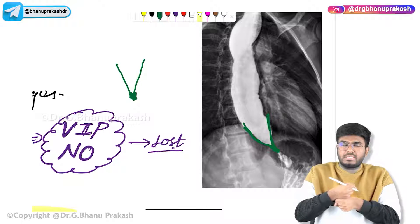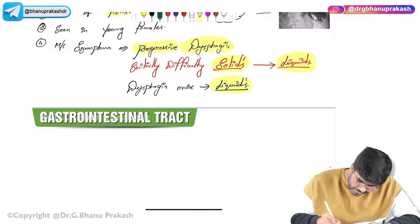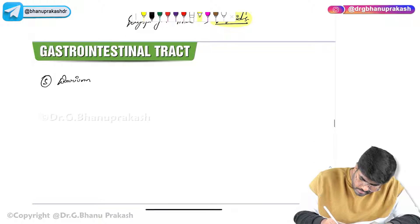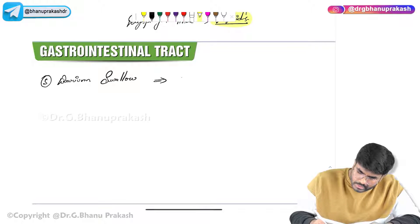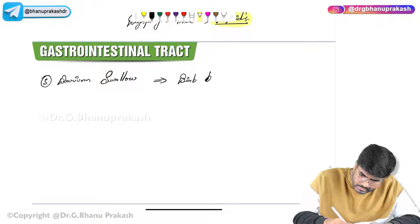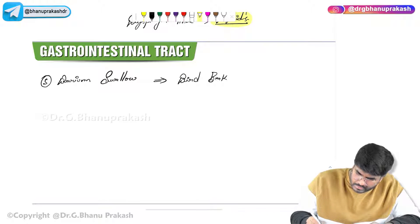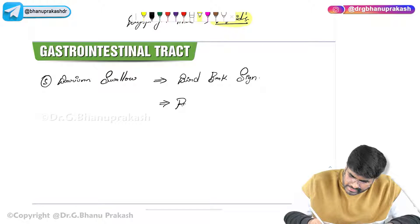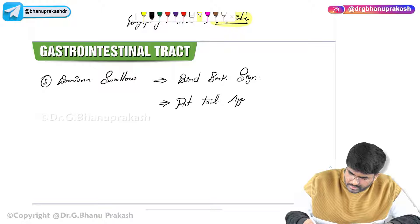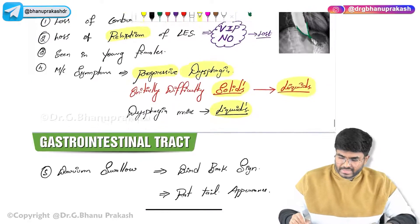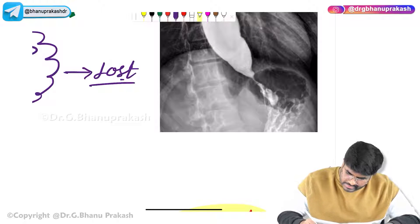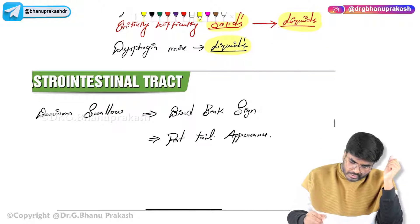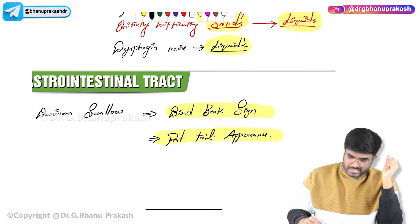So on barium swallow, the finding is the bird beak sign. It is also called the rat tail appearance — some books mention this. The rat tail appearance is because some amount of barium leaks from this area downward, giving a tail-like appearance. So both bird beak appearance and rat tail appearance are seen in Achalasia Cardia on barium swallow.